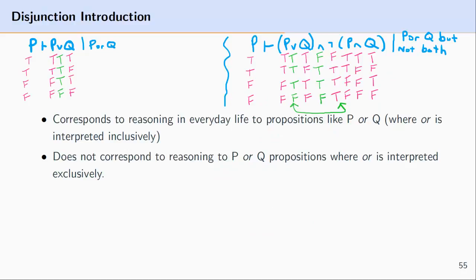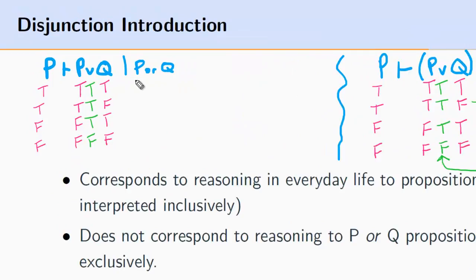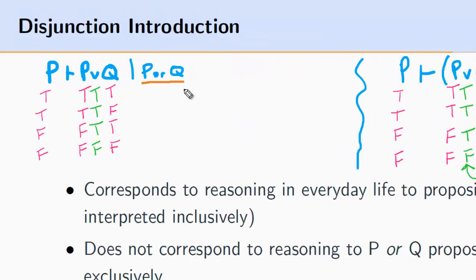One thing worth pointing out with respect to disjunction introduction is that when we apply it to everyday arguments, we are reasoning from a proposition to an 'or' proposition — a complex statement linked together with 'or' — but that 'or' needs to be understood inclusively. If we understand P or Q inclusively, as in 'you can have ice cream or cake or both,' then 'or' statements are true just in the case where either one of the connected formulas is the case.